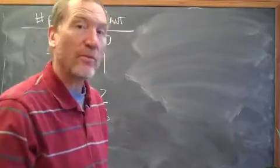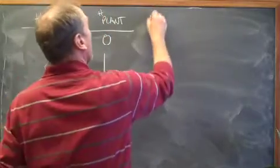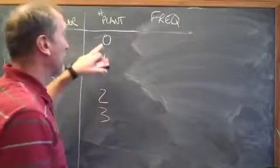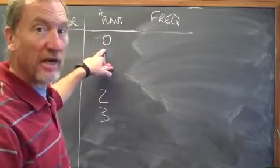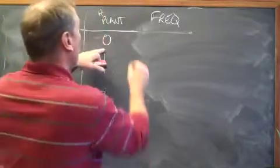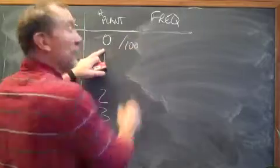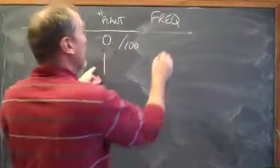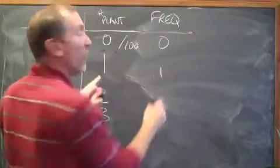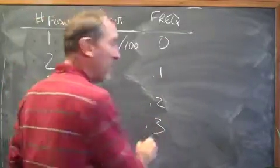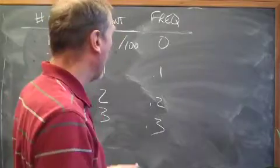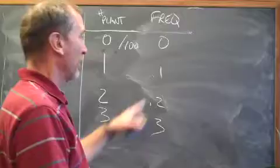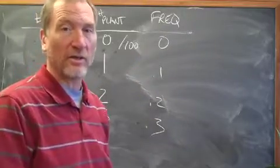Then in the table we can calculate the frequency, which is the number of plants divided by the total number of plants, which is 100. And so the frequency, zero over 100, is zero. This would be 0.1, this is 0.2, this is 0.3, and so on. Now, it isn't always one, two, three like this. I'm just calculating based on this particular example.